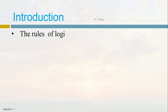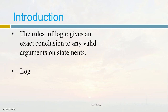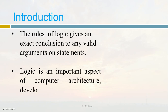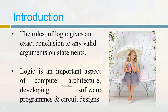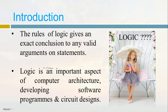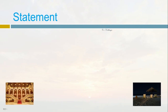What is symbolic logic? The rules of logic give an exact conclusion to any valid argument of statements. Logic is an important aspect of computer science — it is used in computer architecture, developing software programs, and circuit designs. For example, consider a picture of a girl sitting with an umbrella inside her room. There is no logic in this, because neither rain nor sunbeams will affect you when you are inside a room — it seems to be illogical.